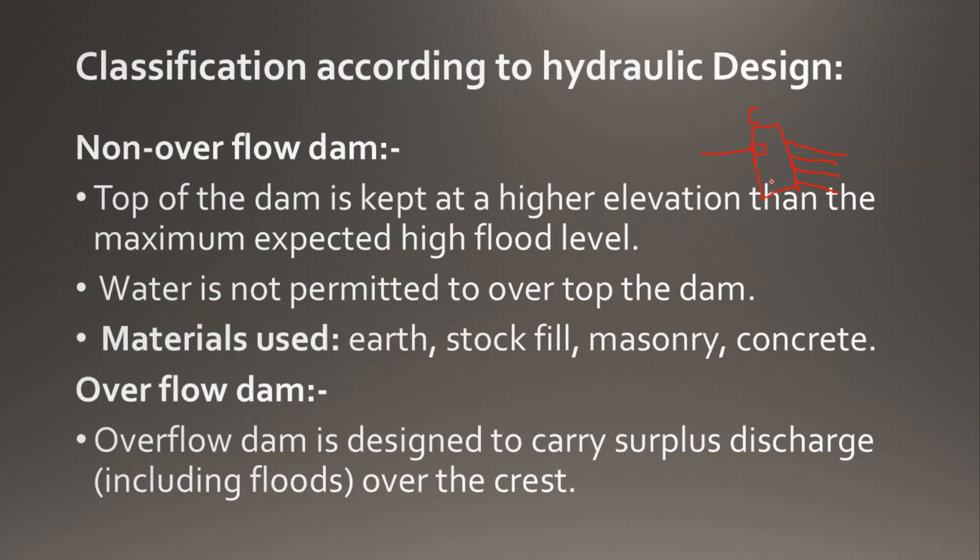To control overflow, we use the crest. Water is not permitted to go over the top of the dam. For example, if the dam is 150 meters, we start releasing water at 100 meters so overflow chances are less and structures won't be damaged. We decide a fixed height — say 120 or 130 meters — that the water won't cross. Materials used include rockfill, masonry, and concrete.